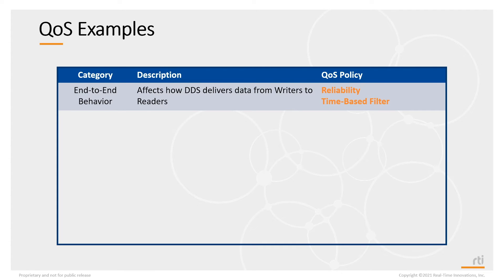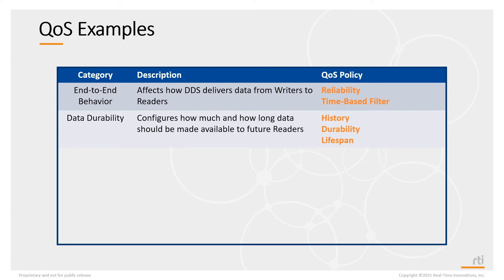End-to-end behavior — how data is delivered from writers to readers. A couple of QoS policies that configure that are the reliability QoS policy and time-based filter. Data durability: how much and how long should data be made available to future readers. If you're sending data now but an application hasn't started yet, DDS has the ability to automatically send new data readers old data. The QoS policies that configure that feature are history, durability, and lifespan.